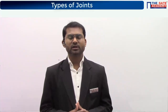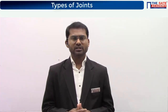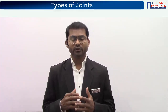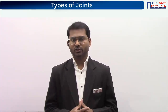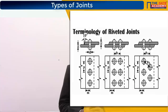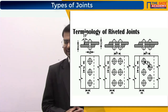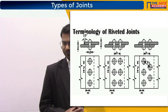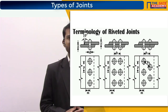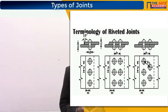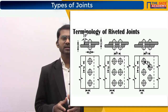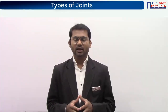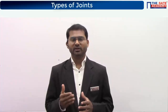Now we are going to start with the terminology of riveted joints. Looking at the first diagram on the secondary screen, there are letters T, D, P, and M. T is the thickness of a plate — whatever plate is there, its thickness is taken as T. D is the diameter of the shank part of the rivet, also called simply the diameter of the rivet. Keep in mind that whenever they say diameter of a rivet, it means the diameter of the shank part.